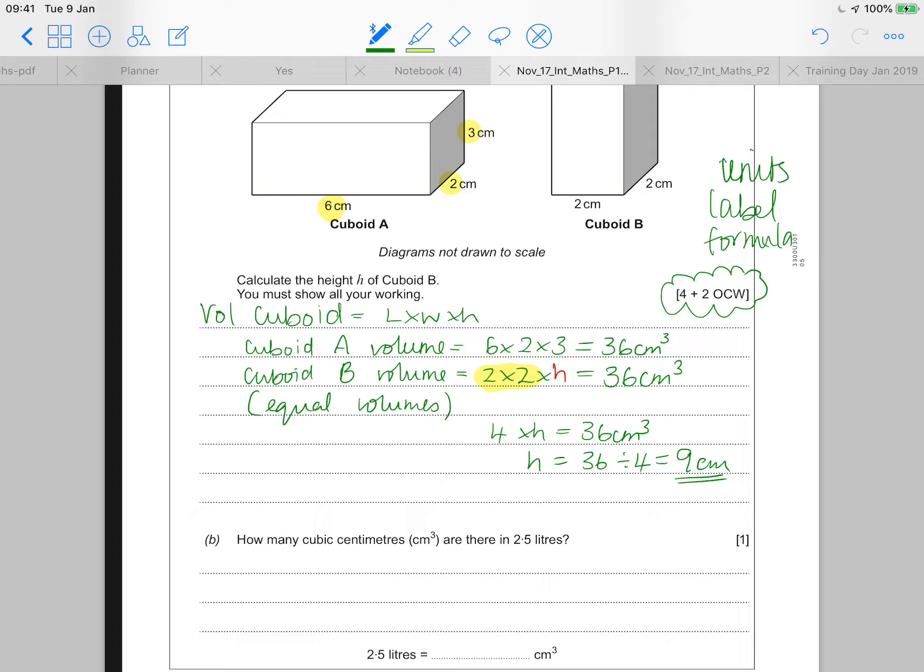Because that shows every step of how I went from having the basic calculation here to having the actual height of the shape over here. I've labeled my answer with H. I've made sure my answer has the centimetres on the end. And every calculation there that has a volume has a cm cubed on the end. I've labeled all my thinking and I've included my formula. So I think that I would get both of those OCW marks.